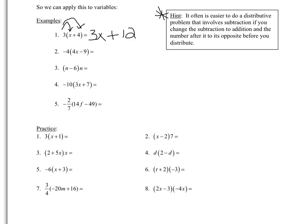After you get better with distributive property, you might not need to do this, but sometimes it helps. For example, with negative 4 times 4x minus 9, you can think of it as negative 4 times the quantity 4x plus negative 9, and then distribute. Negative 4 times 4x gives negative 16x. And negative 4 times negative 9 gives positive 36, so there's definitely a plus in between.